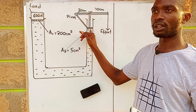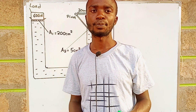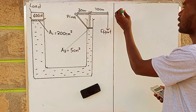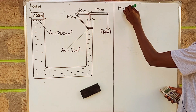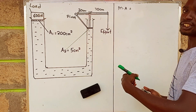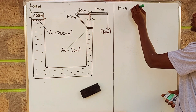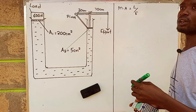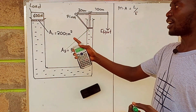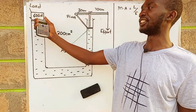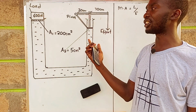The cross-sectional area of this cylinder is equal to 5 square centimeters. The mechanical advantage of a hydraulic press system is calculated by the formula: load over effort. The load applied here is equal to 600 newtons, but we don't have the effort yet.